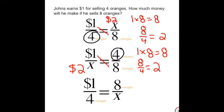Notice the first and second ways both worked. We'll look at why in just a second, but let's look at the third one first. I have one dollar over four oranges is equal to eight oranges over our missing value, which if it works correctly should once again be two.